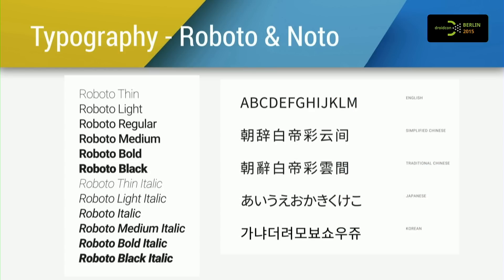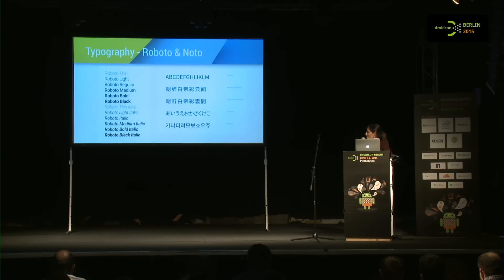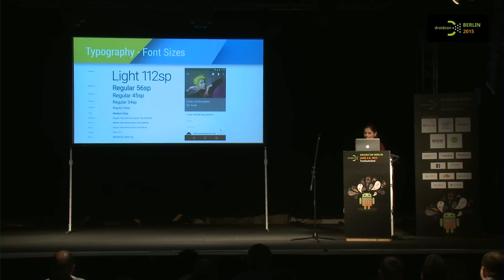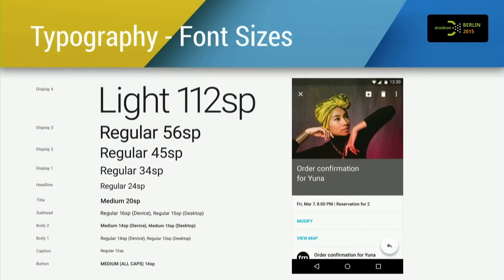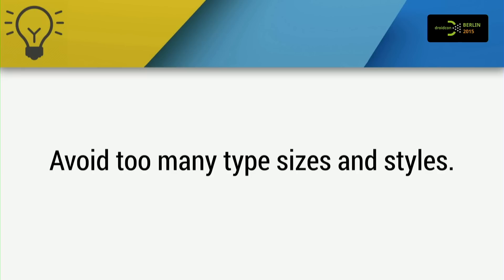Typography is another important aspect of any app, not just material design. The two standard typefaces available in material design are Roboto and Noto. Roboto is mainly used for English and English-like languages, whereas Noto is used for all other languages, including Middle Eastern and Southeast Asian languages. Google also provides size and style guidelines to balance content delivery and reading comfort. Depending on what type of app you're building — like a news reading app — you should refer to those guidelines. But be careful: avoid using too many sizes because it can be distracting to users' eyes.